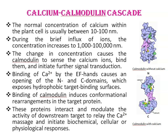This change in concentration causes Calmodulin to sense the calcium ions, bind to them, and initiate further signal transduction. In the calcium ion-free state, helices are collapsed in compact orientation and the linker is disordered; in the calcium ion-saturated state, calcium ions are visible bound to Calmodulin.